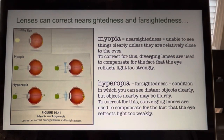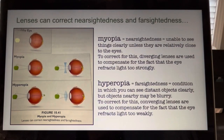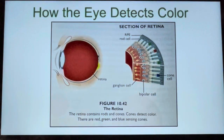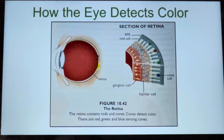So quickly: myopia is nearsightedness — it's when you're unable to see things clearly unless they are relatively close to the eye. Hyperopia is farsightedness — it's the condition in which you can see distant objects clearly, but objects nearby may be blurry. How we perceive color. Experiment 10.4, how the eye detects color, we will do in class. But let's at least cover it in the text. You can come back after we've done the experiment to help understand it better.